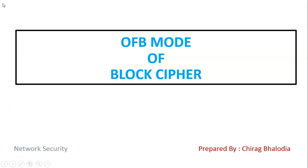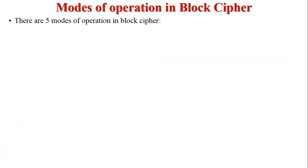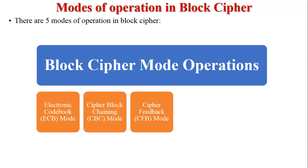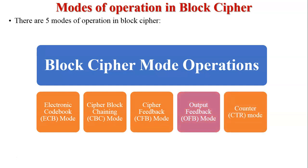Hello friends, myself Chirag. In this video I am going to discuss OFB — Output Feedback Mode — of block cipher, a topic of network security. There are five modes of operation in block cipher: first, Electronic Code Book mode; second, Cipher Block Chaining mode; third, Cipher Feedback mode; fourth, Output Feedback mode; and fifth, Counter mode.